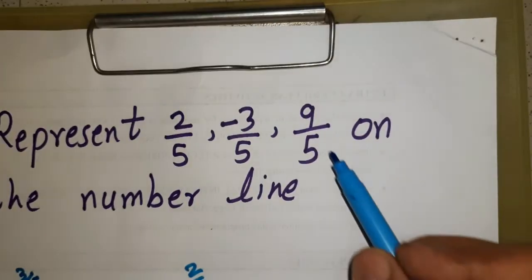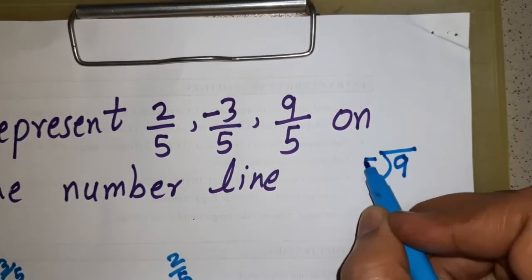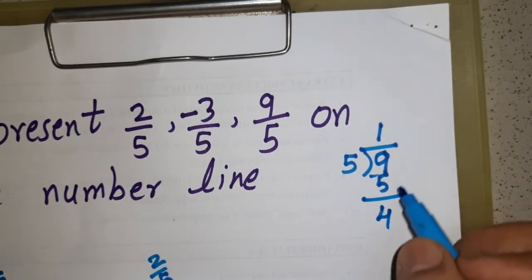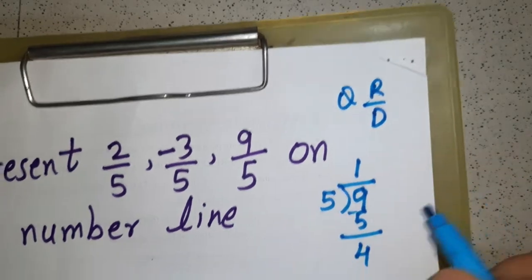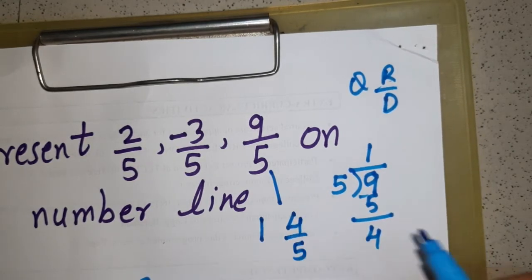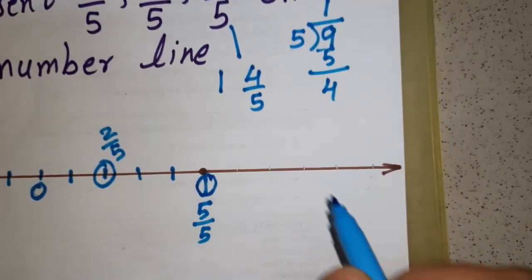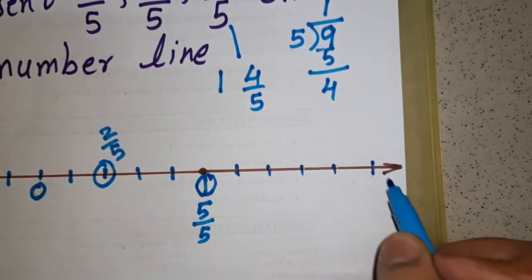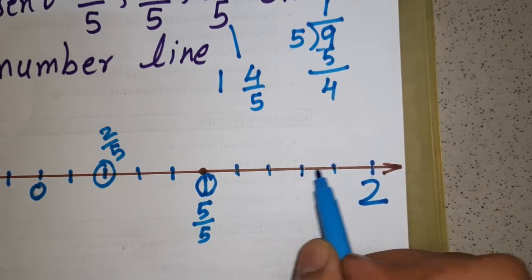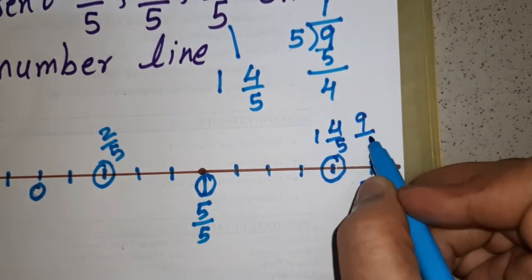What if it is an improper fraction? For 9 upon 5, we first convert it into a mixed fraction. We divide 9 by 5: 5 ones are 5, remainder is 4. So 9 by 5 is the same as 1 and 4 by 5. This lies between 1 and 2. We divide that section into 5 equal parts: 1 and 1 by 5, 1 and 2 by 5, 1 and 3 by 5, 1 and 4 by 5 — which represents 9 by 5 on the number line.